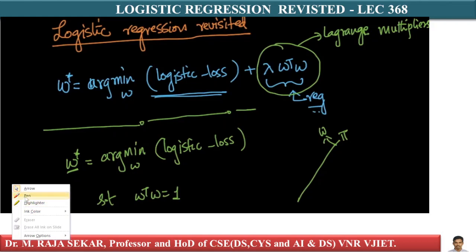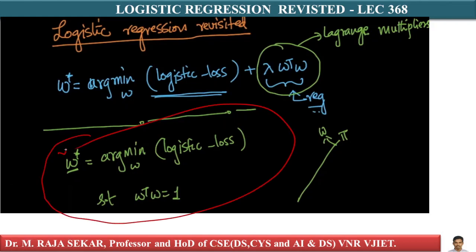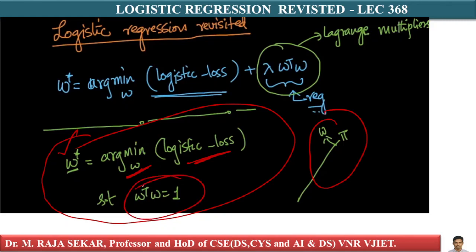What is your actual problem in logistic regression? The actual problem is: find w star which minimizes the logistic loss such that w-transpose-w equals one. Recall that w is normal to the hyperplane. So: w star equals argmin over w of logistic loss, such that w-transpose-w equals one.